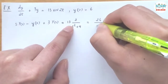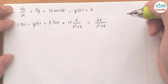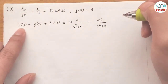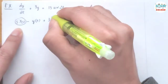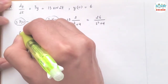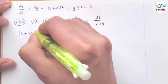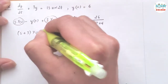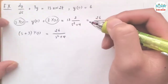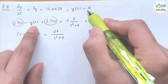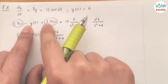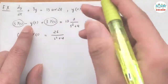So 13 times 2 gives 26 over s squared plus 4. Now looking at the capital Y(s) terms, I factor out capital Y(s) and I'm left with s plus 3 in parentheses, equals 26 over s squared plus 4. Then we have negative y(0), and y(0) equals 6, so we have negative 6.